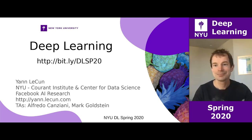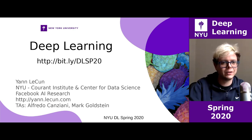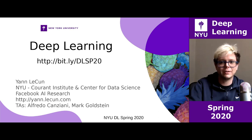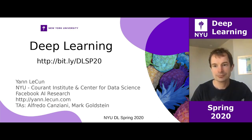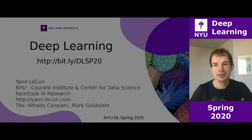We have today Mike Lewis. He's a research scientist at Facebook AI Research, working on natural language processing. Previously, he was a postdoc at the University of Washington working with Luke Zettlemoyer on search-based structure prediction. He completed his PhD at the University of Edinburgh, combining distributional and logical approaches to semantics, has a Master's degree from the University of Oxford, and won the best paper award at EMNLP in 2016. Let's get started with today's presentation.